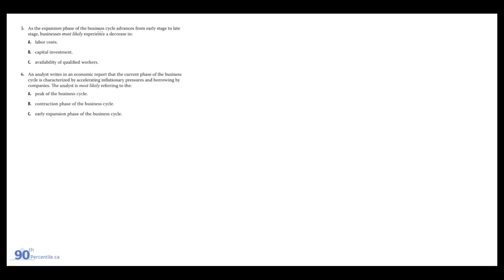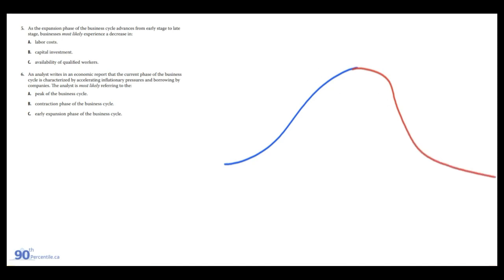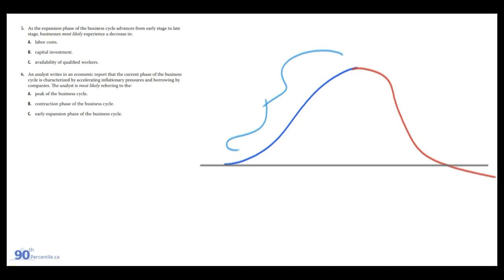As the expansion phase of the business cycle advances from early stage to late stage, businesses most likely experience a decrease in labor costs, capital investment, or availability of qualified workers. So we're going from the early stage to late stage of an expansion — this part of the graph, the blue area where we're going up. And if trend GDP is here, we have a gap, so we're trending above potential or trend GDP.